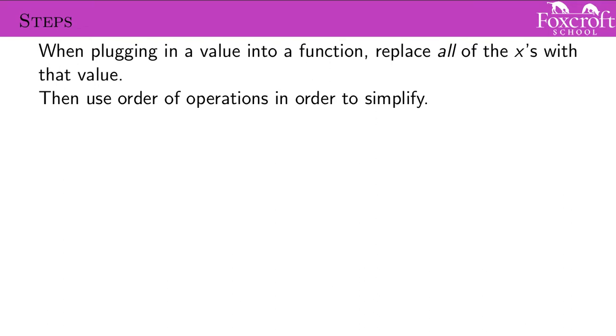The steps are really similar to just a general order of operations thing. When you want to figure out f of some specific x, there's going to be some number in here, so it might look like f(2). This is saying that your x value is going to be 2, so you're going to replace all the x's in your expression with the value that you want. And then after you do that, it's just order of operations—you just simplify it until you get that one output for that input.